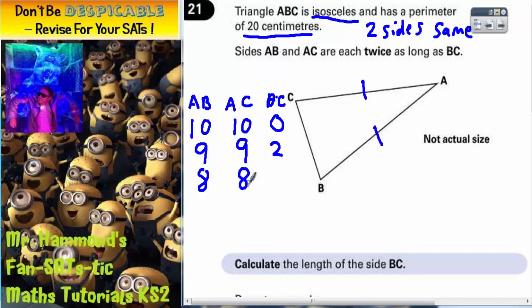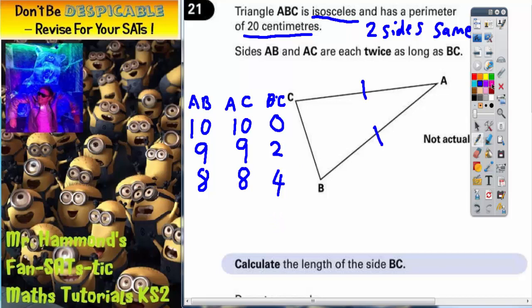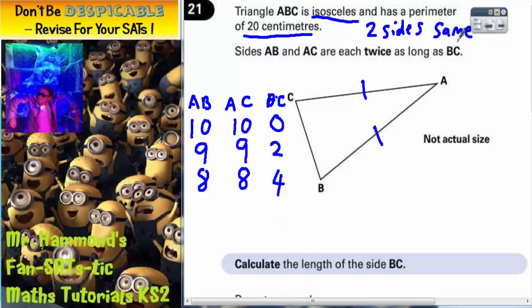So if AB was 8 and AC was also 8, then what would BC have to be? 8 plus 8 is 16, plus an extra 4 would get us up to 20. Now at this point you should be noticing that that is actually the answer, because 8 and 8 are both twice as long as 4. So the side BC must be this 4.